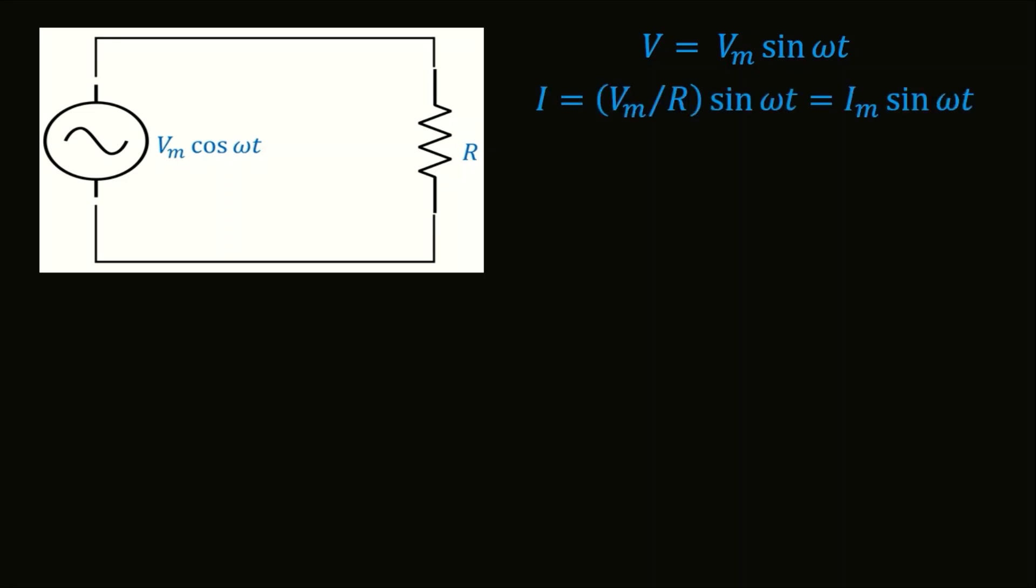As reactive power is observed in AC systems, let's consider an AC voltage, which will cause the current I equals Im sin ωt in a simple R circuit.